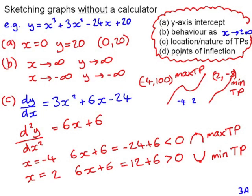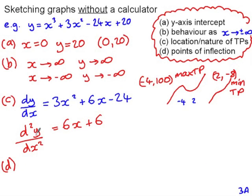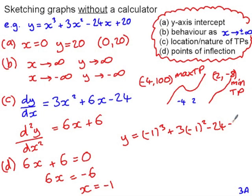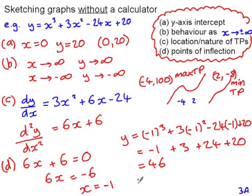Finally, we look for any points of inflection, which occur when the second derivative equals zero. Setting 6x plus 6 equal to zero gives x equals negative 1. Substituting into the function: y is negative 1 cubed plus 3 lots of negative 1 squared take 24 lots of negative 1 plus 20, which equals 46. So (negative 1, 46) is our point of inflection.